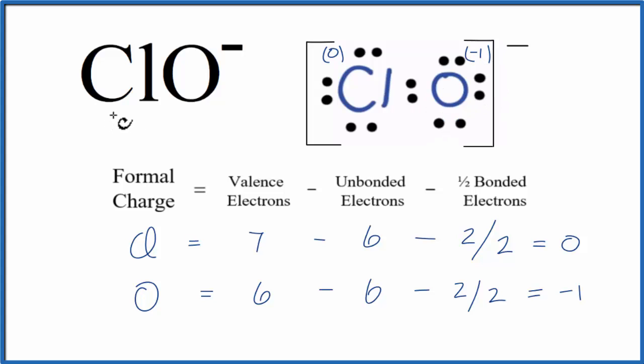So that's the formal charge for each element in ClO minus, the hypochlorite ion. This is Dr. B, and thanks for watching.